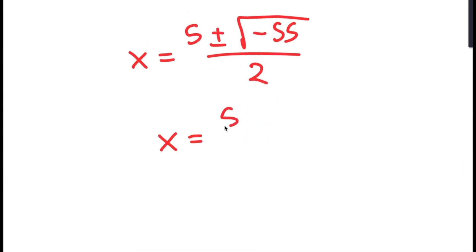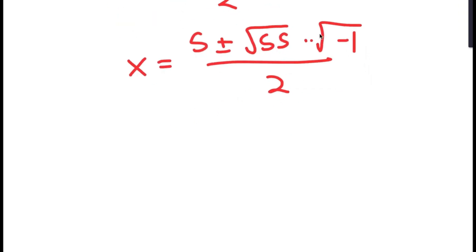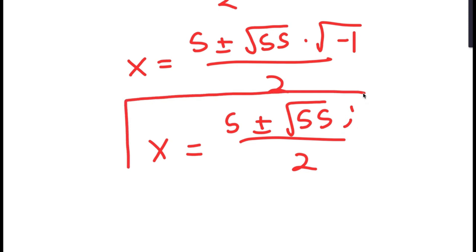This equals the square root of 55 times the square root of negative 1, over 2. Since the square root of negative 1 equals i, I get 5 plus or minus the square root of 55 times i, over 2. These are two more solutions to this equation.